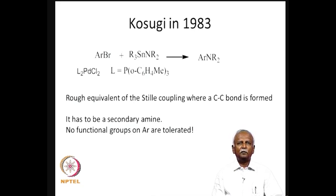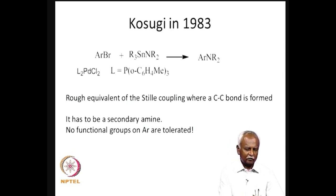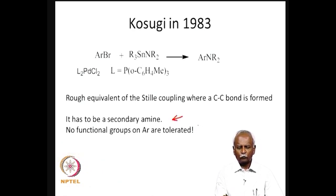There were two serious limitations for this reaction. First, no functional group on the aryl group was tolerated — if there was any functionality other than the bromine, the reaction would not proceed. Similarly, if a primary amine was used, the reaction would not work. These two serious limitations meant that the Kosugi reaction was not popularized significantly.